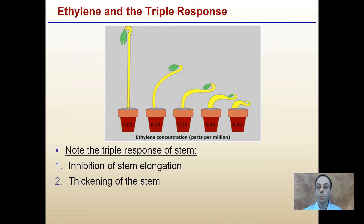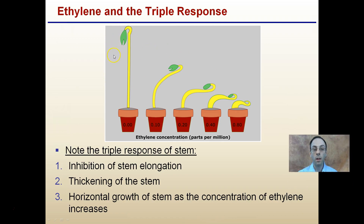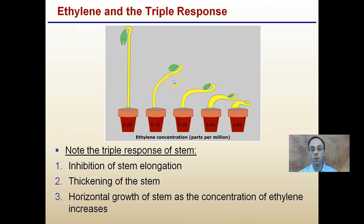Lastly, with ethylene there's something called a triple response. As ethylene concentration increases in parts per million: first, ethylene inhibits stem elongation — the elongation of the stem is reduced. Second, the stem is thickened — compare the stem diameter at low versus high ethylene concentration. Third, there is horizontal growth of the stem — we see upright growth with no ethylene, and as ethylene increases the stem slowly bends to the side, also thickening, with some variation in leaf maturation rates as well.